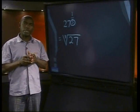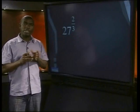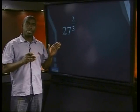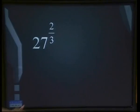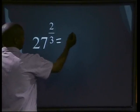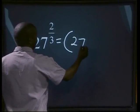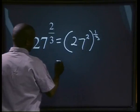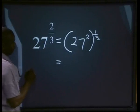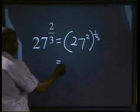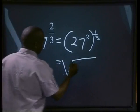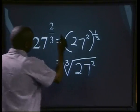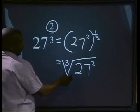If the exponent is 2 over 3, like in this example, the denominator 3 tells you the root sign. But what about the numerator 2? We can write this as 27 to the power of 2 over 3. The denominator 3 represents the root sign, so we have the cube root of 27 to the power 2. The 2, which is your numerator, stays inside your root sign.